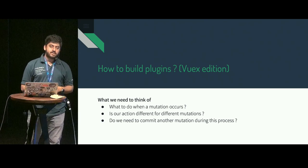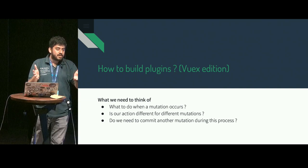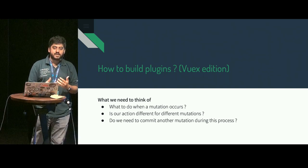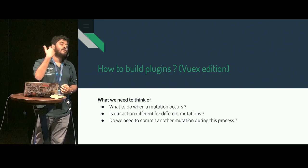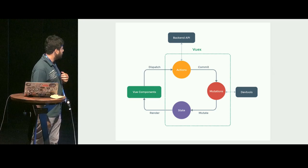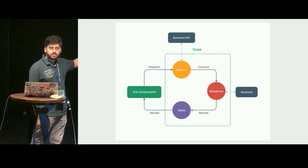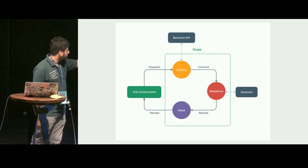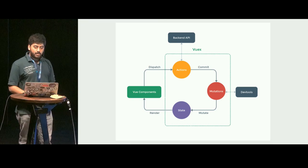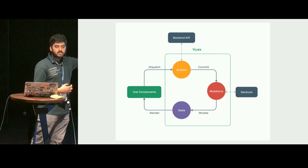When you build a Vuex plugin, you need to think about: what do you want to do when a mutation occurs, do you want to do different things for different mutations, do you want to commit another mutation when one happens, and it's very important to avoid the recursive cycle you might end up in — because a mutation you commit will trigger your plugin again. In Vuex, your component can dispatch actions, actions can do async stuff like talk to the API, then commit a mutation. Mutations are the only place where you can change state, and after that there may be a re-render. The only place our plugin can hook into this lifecycle is at the mutation level.